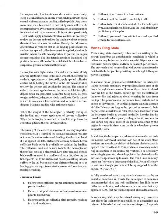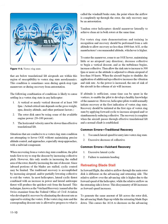A vortex ring state may be entered during any maneuver that places the main rotor in a condition of descending in a column of disturbed air at low forward airspeed — below translational lift airspeed. This condition is sometimes seen during quick-stop type maneuvers or during recovery from autorotation. The following combination of conditions is likely to cause settling in a vortex ring state: 1. A vertical or nearly vertical descent of at least 300 fpm. 2. The rotor disc must be using 20–100% of available engine power. 3. Horizontal velocity must be slower than effective translational lift. Situations conducive to vortex ring state include attempting to hover OGE without maintaining precise altitude control, and approaches — especially steep approaches — with a tailwind component.